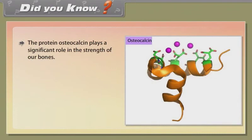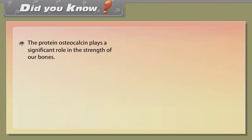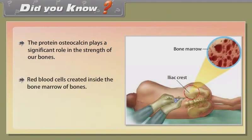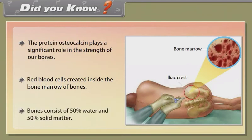Did you know? The protein osteocalcin plays a significant role in the strength of our bones. Red blood cells are created inside the bone marrow of bones. Bones consist of 50% water and 50% solid matter.